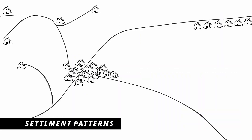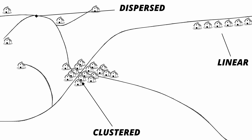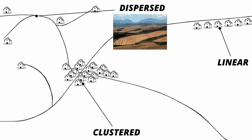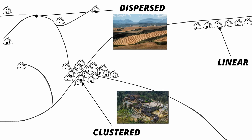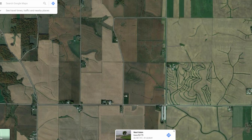Let's finally look at settlement patterns. There are three main methods: nucleated, aka clustered; dispersed; and linear. Clustered means the farms are clustered, dispersed means the farms are dispersed, and linear means the farms are in a line. The important part is to pair these with the types of farming they're associated with — for example, a wheat farm is more likely to be dispersed, and a wet rice farm clustered. Here are GPS examples of what a clustered farm might look like in Uchijuku, Japan, and a dispersed farm in West Union, Iowa.